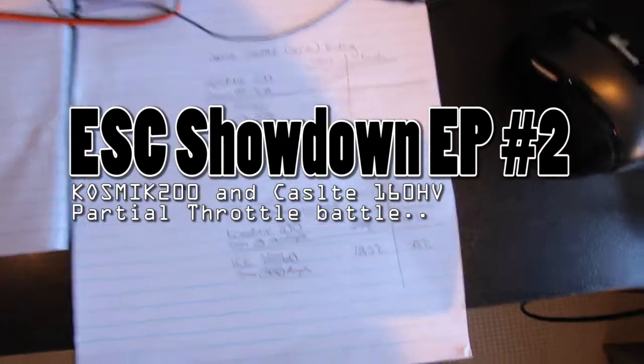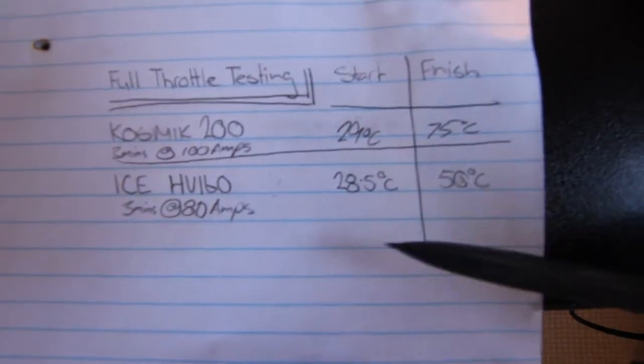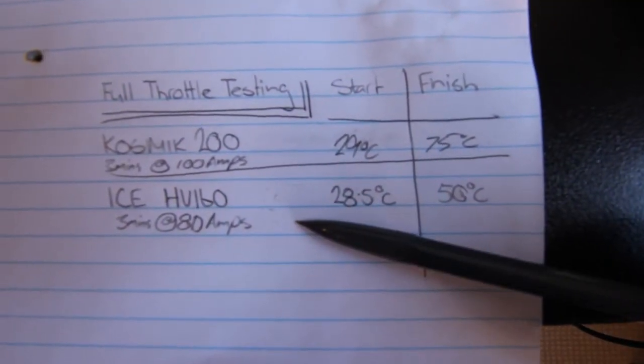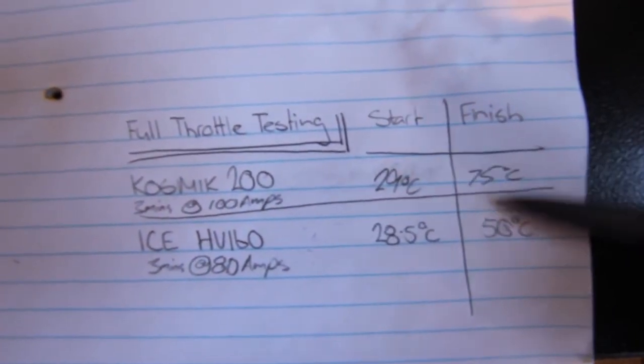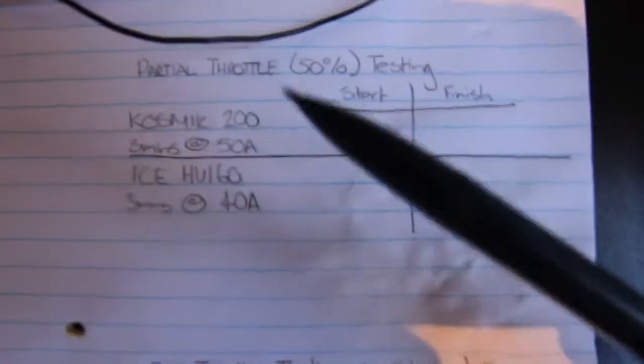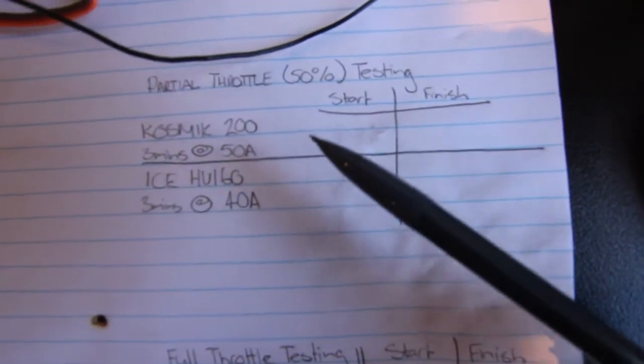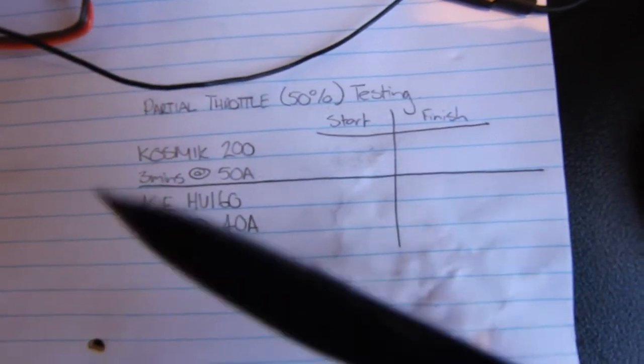It's time for our partial throttle testing. From our previous test, we saw that the HV160 outperformed the Cosmic 200 by nearly 25 degrees Celsius at the end of the 3 minutes. Our partial throttle testing will be run at 50% throttle, at 25% of the ESC's rated current.